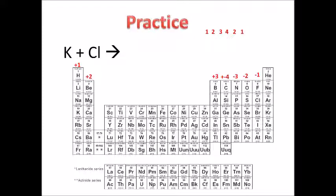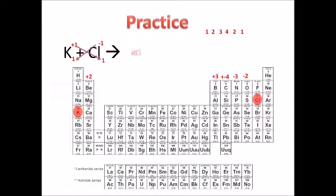Next problem: potassium plus chlorine produces what? Potassium is in group one — its oxidation number is plus one. Chlorine has an oxidation number of negative one. We drop the signs, bring the one down as the subscript for chlorine, and the one down as the subscript for potassium. It's a one-to-one ratio and the product is KCl. Again, that's a salt — a metal plus a non-metal, ionically bonded, a binary compound containing two elements.